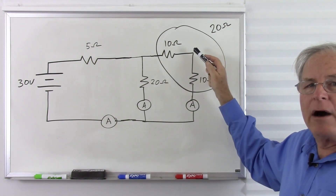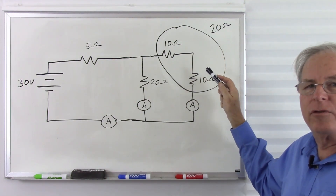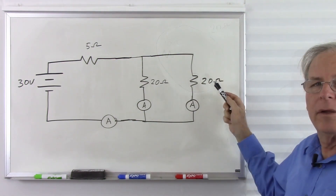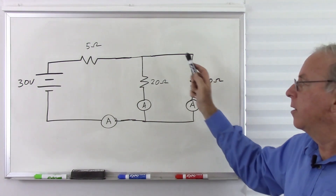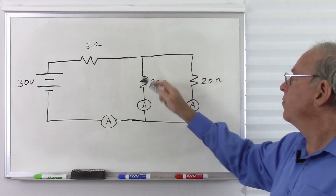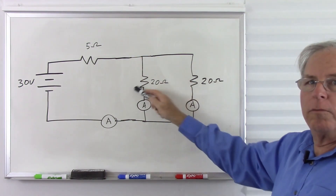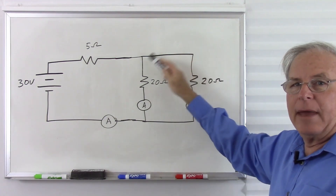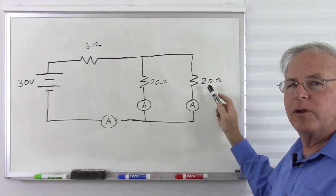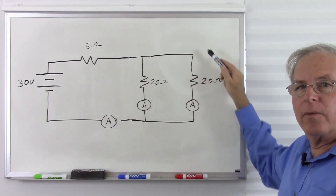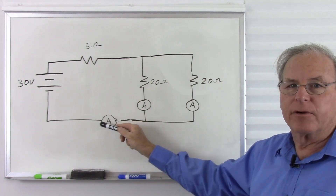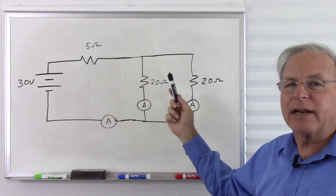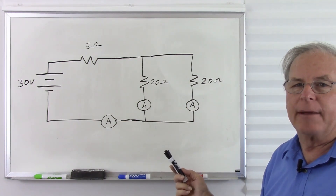Zooming out, we're back to the same circuit as before: 5 ohms and 20 ohms together make 10 ohms. We have 1 amp of current here and 1 amp of current there, combining for 2 amps — exactly the same circuit as before.